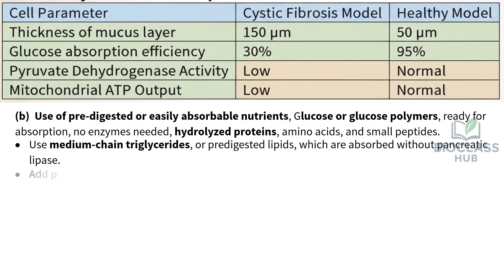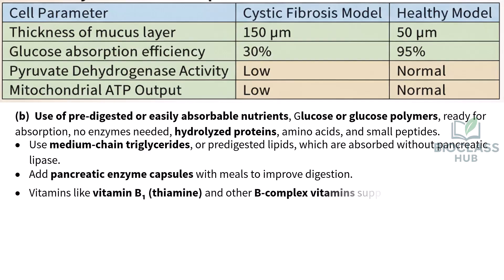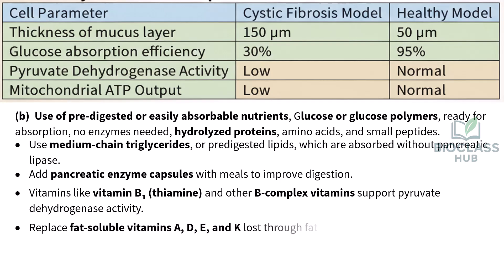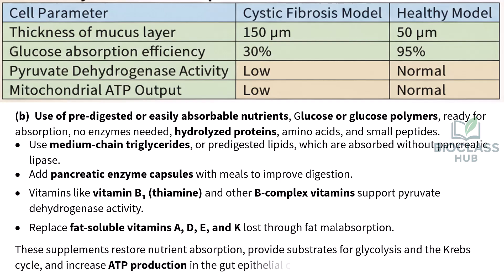Add pancreatic enzyme capsules with meals to improve digestion. Vitamins like vitamin B1 (thiamine) and other B-complex vitamins support pyruvate dehydrogenase activity. Replace fat-soluble vitamins A, D, E, and K lost through fat malabsorption. These supplements restore nutrient absorption, provide substrates for glycolysis and the Krebs cycle, and increase ATP production in the gut epithelial cells.